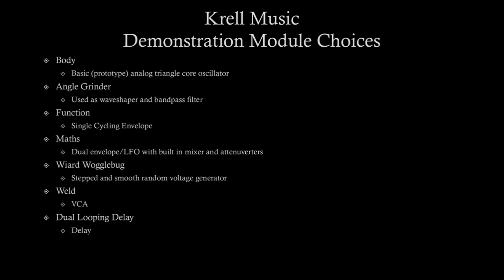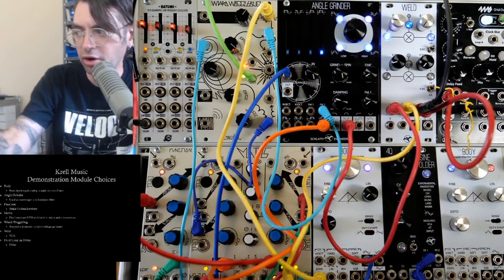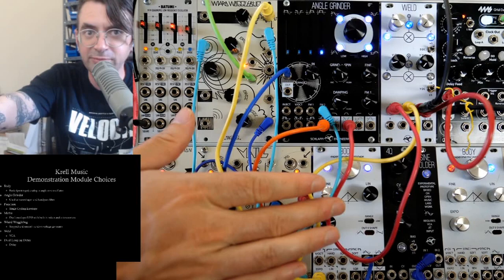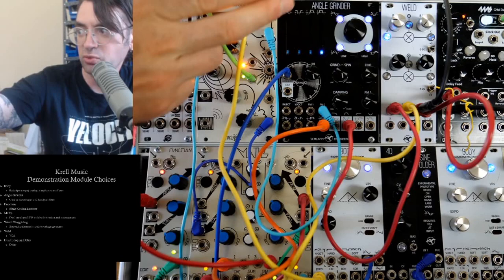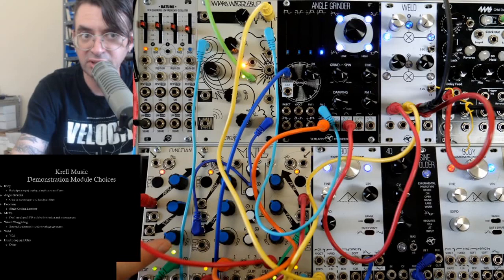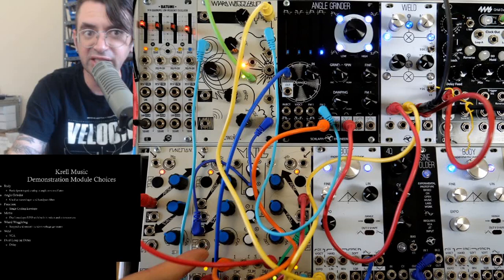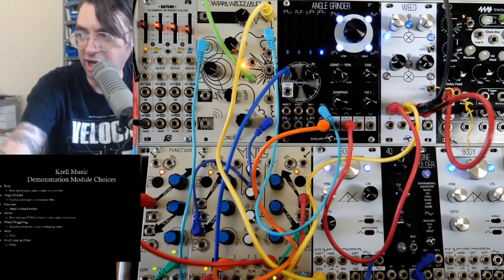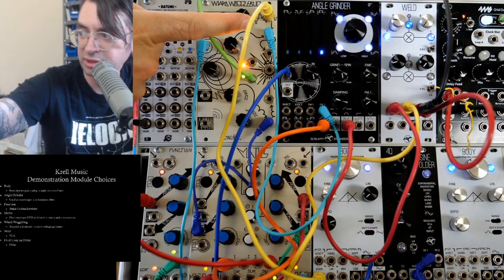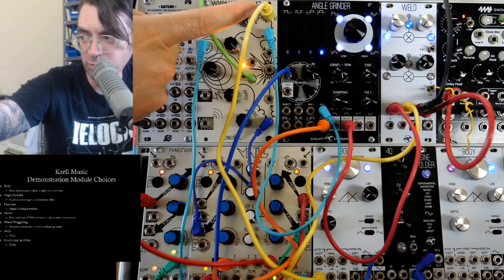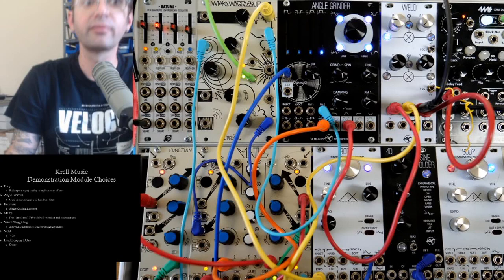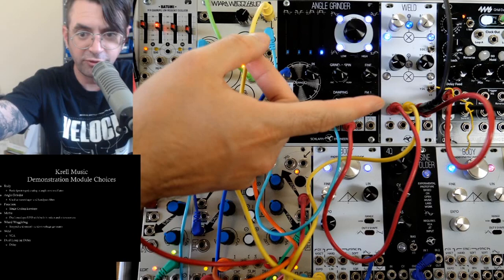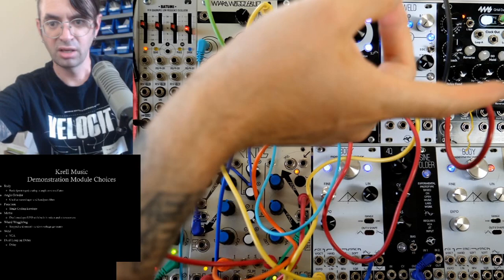The first patch we're going to show is the Krell music patch. The modules I've chosen to demonstrate it are the Body, a standard analog core triangle core oscillator; Angle Grinder, in this case being used as a wave shaper and bandpass filter; Function, a single cycling envelope; Maths, two cycling envelopes; the Wired Wogglebug being clocked from the Maths end-of-cycle output, with a stepped output, a random output, a smooth random output, a stepped random output, another smooth random output, and a Wogglebug VC output. Also the Weld for VCA duties and the DLD for delay.